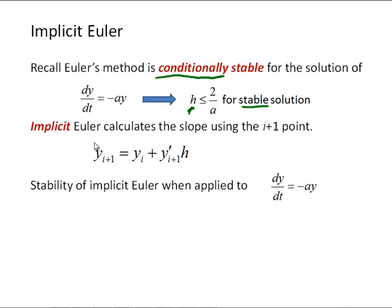Implicit Euler calculates the slope using the i plus 1 point instead of the ith point. So this is similar to the Adams-Moulton method that we looked at before in terms of using that i plus 1 point in the actual calculation of the time step. So let's look at applying Euler's method to that same differential equation using implicit Euler's method.